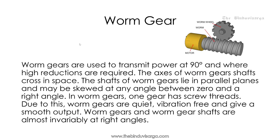Worm gears: worm gears are used to transmit power at 90 degrees and where high reductions are required. The axes of worm gear shafts cross in space. The shafts lie in parallel planes and may be skewed at any angle between zero and a right angle. In worm gears, one gear has screw threads. Due to this, worm gears are quite vibration-free and give a smooth output. Worm gears and worm gear shafts are almost invariably at right angles.